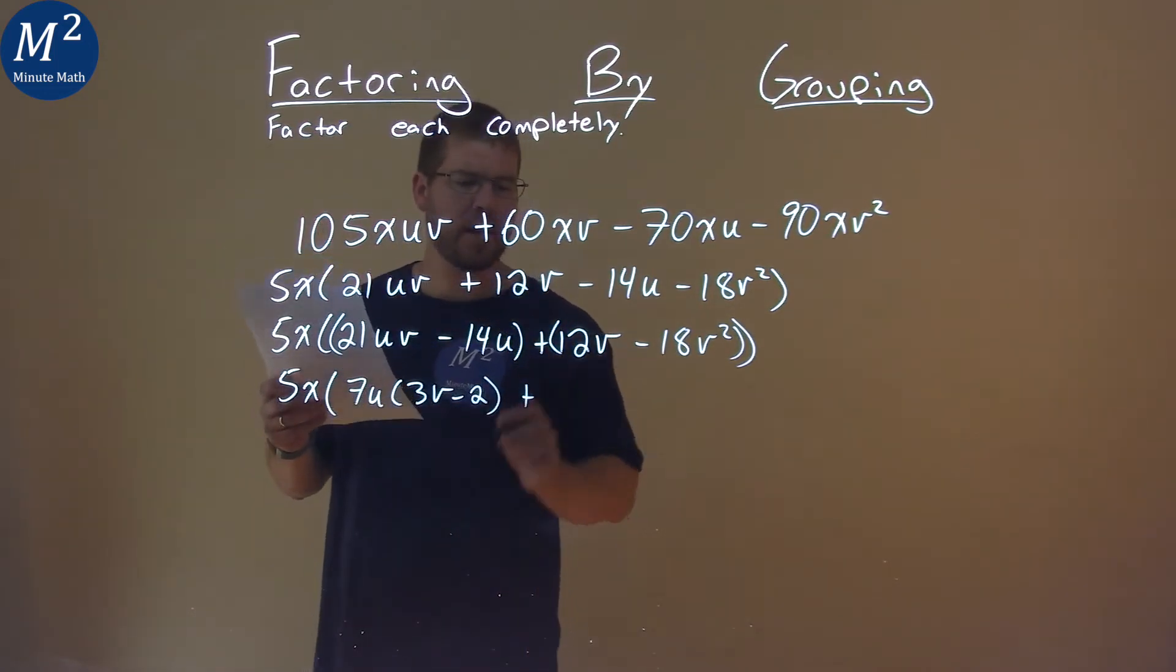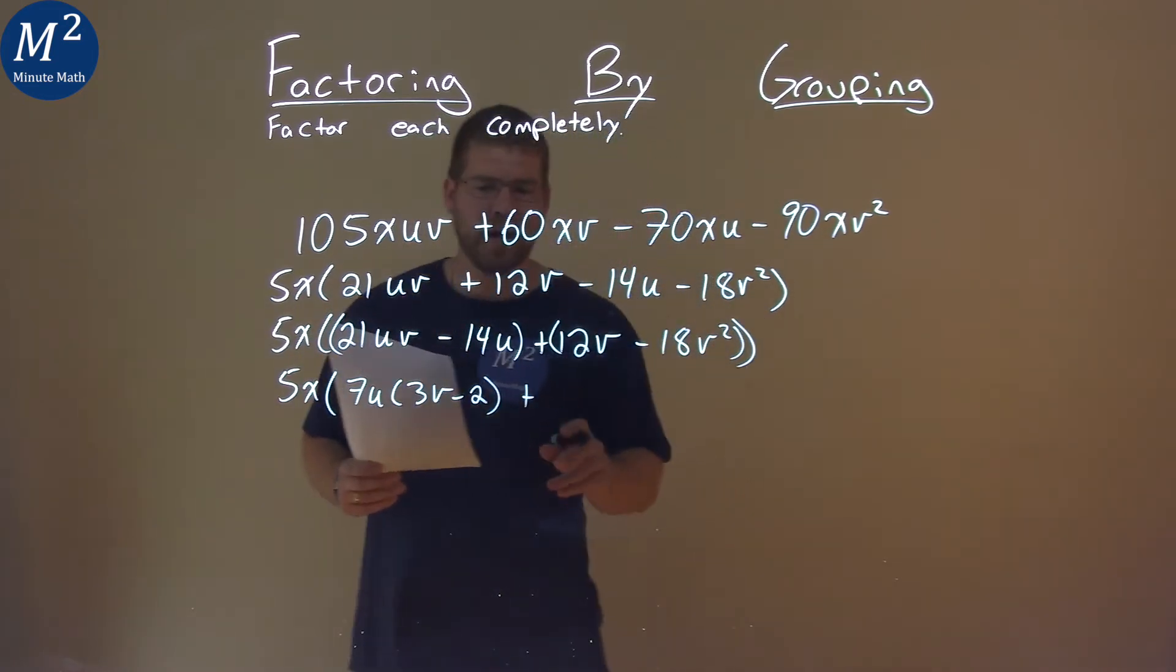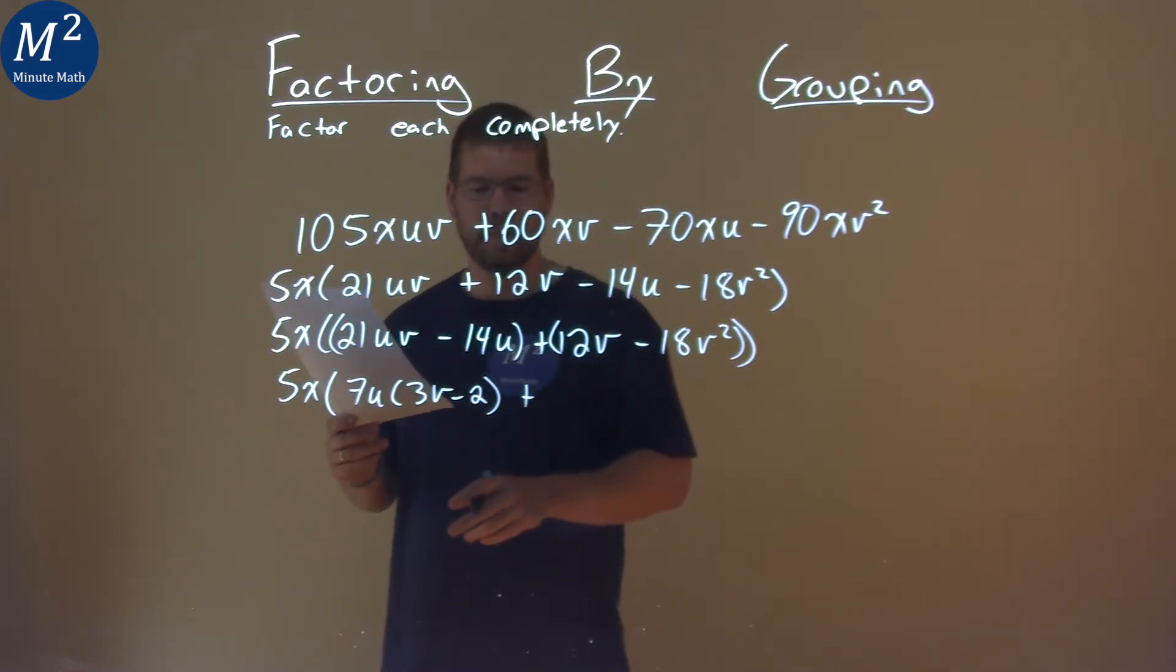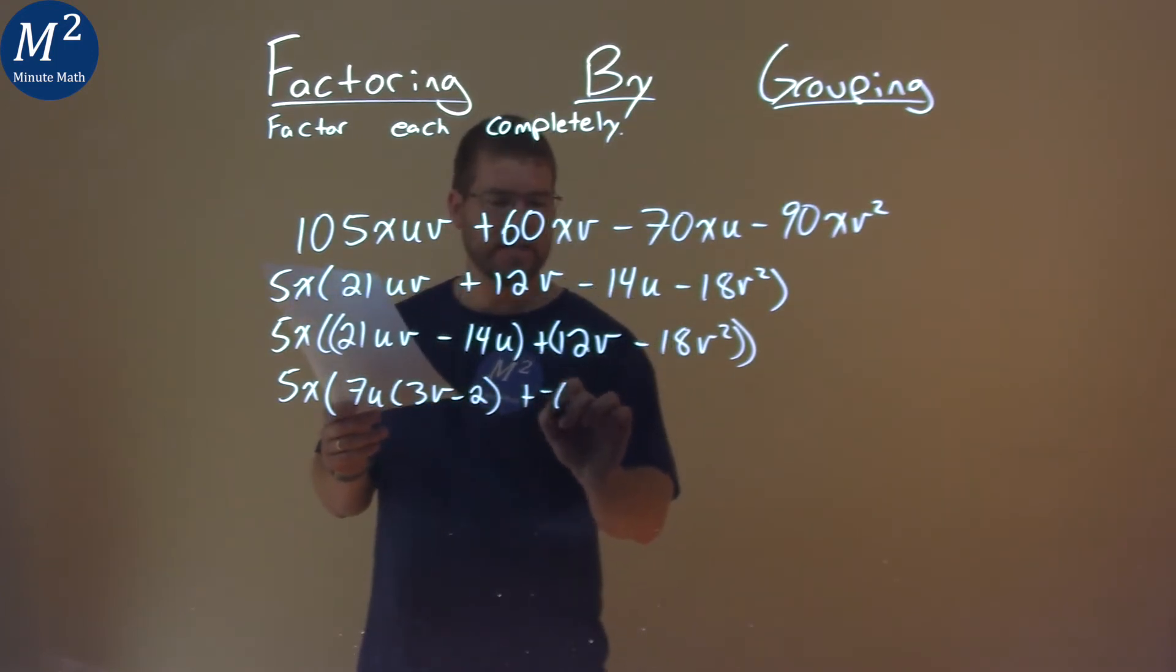The second part, I'm going to do the same exact thing, but I want to see if I can get a 3V minus 2. I notice a 6V is in both parts, but if I pull out a minus 6V here, what happens?